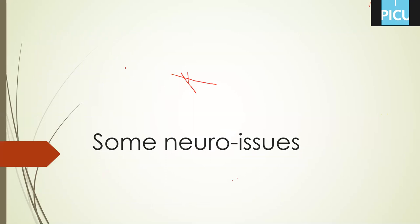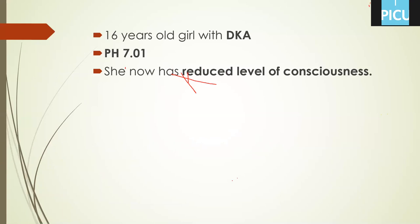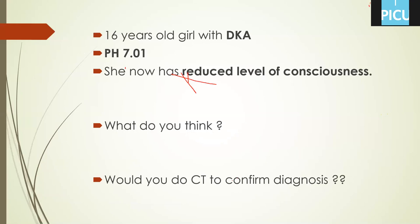We now have one case: DKA, 16-year-old, admitted from casualty to our PICU. pH was 7.01. She is receiving IV fluid and insulin infusion and was interactive. But suddenly the nurse noticed a reduced level of consciousness and called you. What do you think is the cause and how to manage?